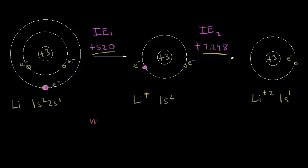The first factor is nuclear charge, which refers to the number of protons in the nucleus. For the neutral lithium atom, three positive charges attract the outer electron. For the lithium +1 cation, it's a similar situation — we still have three protons. Because the number of protons is the same, we need to think more about effective nuclear charge and the effect of electron shielding.